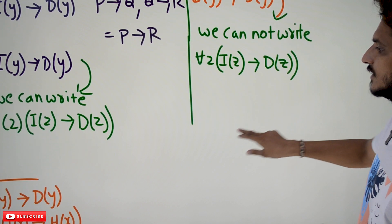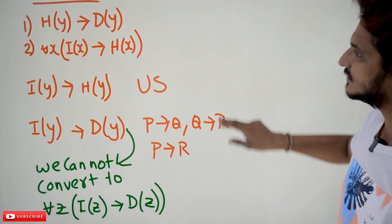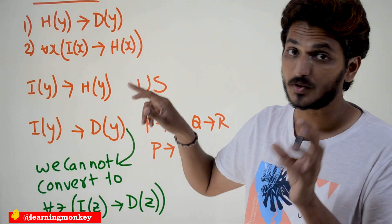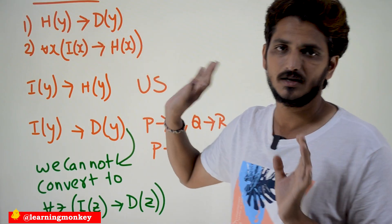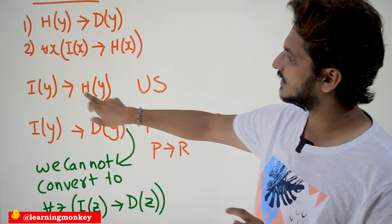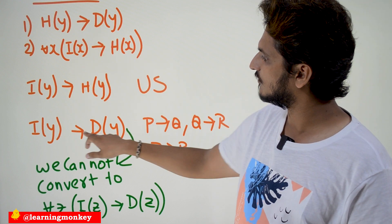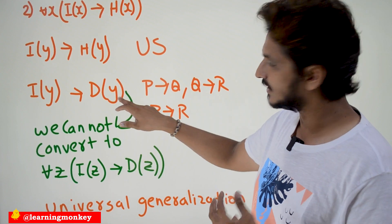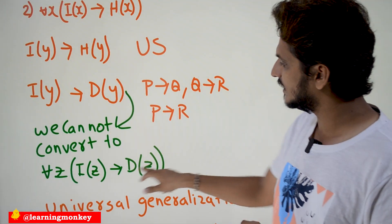There is one more situation where we cannot apply universal generalization. Let's take this example. The given statement is h(y) implies d(y) — this is going to be true for only one single subject, y. And for all x, i(x) implies h(x) — this can be converted to i(y) implies h(y). From these, we can conclude i(y) implies d(y). Now, can we convert this into universal generalization — can we say for all z, i(z) implies d(z)?